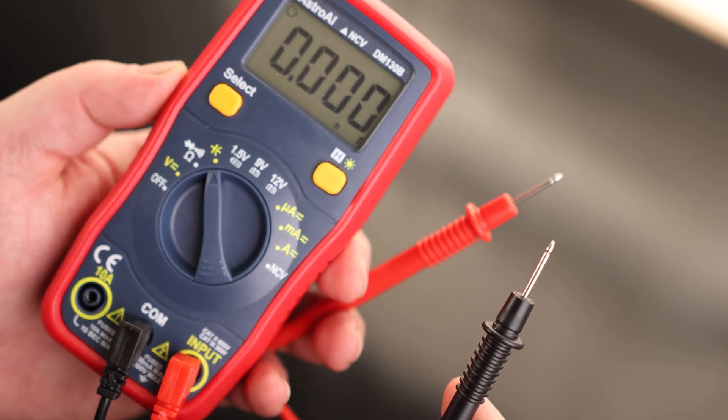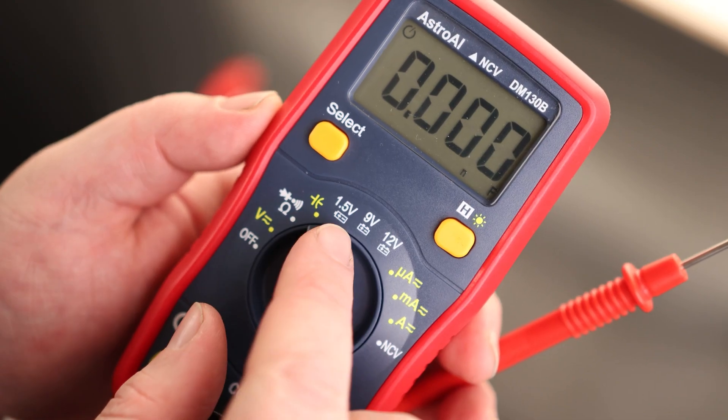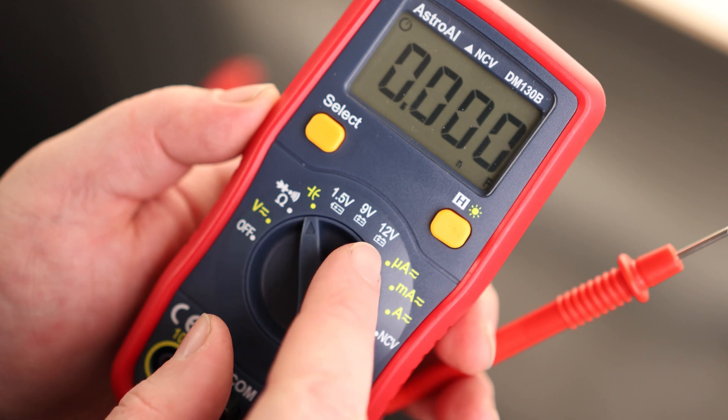Then we got capacitance. So if you have a capacitor, we want to check that. We would use this. And this is kind of interesting. We can check for 1.5 volt batteries, 9 volt and 12 volt.